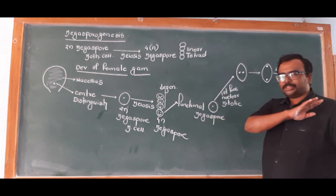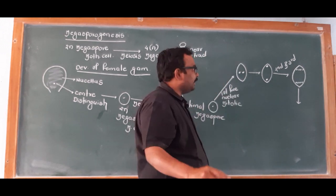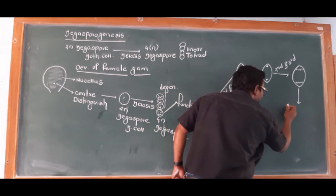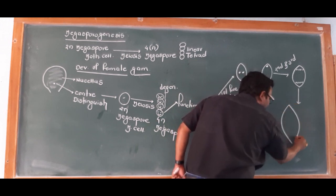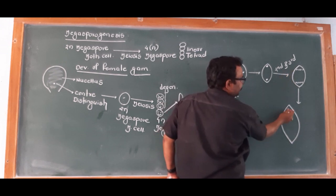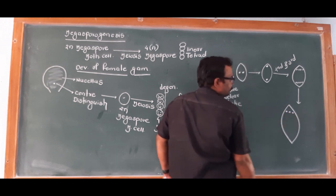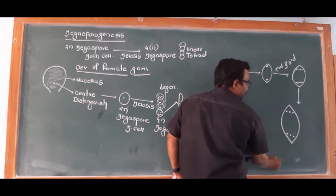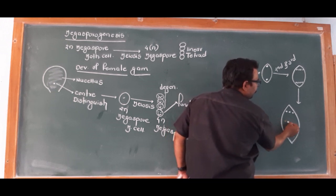These divisions are only nuclear divisions — karyokinesis — and wall formation (cytokinesis) does not occur. Every pole has 4 nuclei. So after three free nuclear divisions, our female gametophyte is developing with 4 nuclei at each pole.